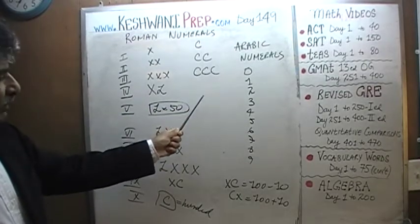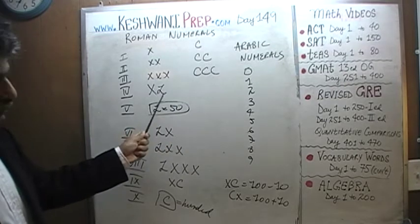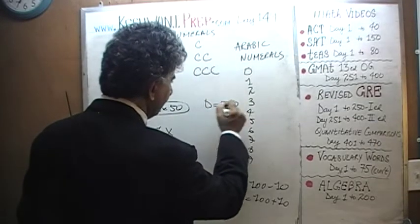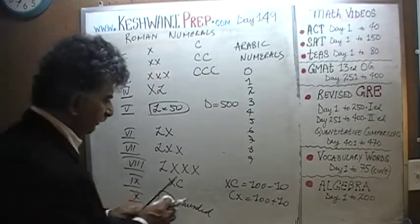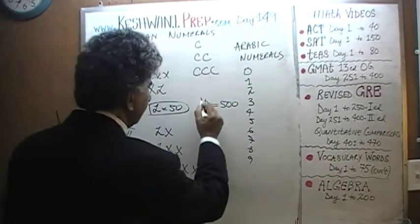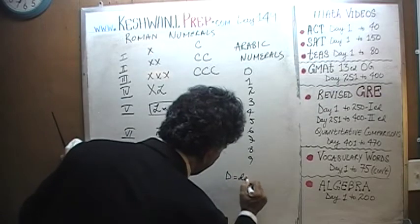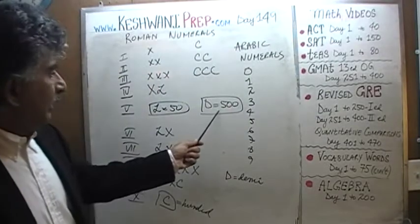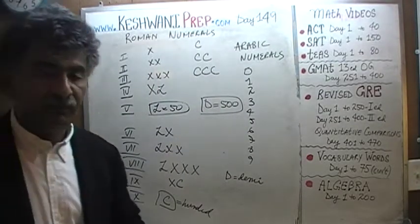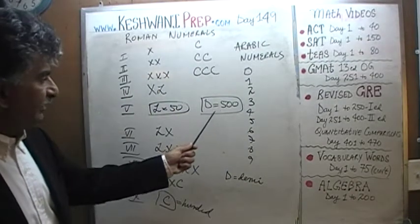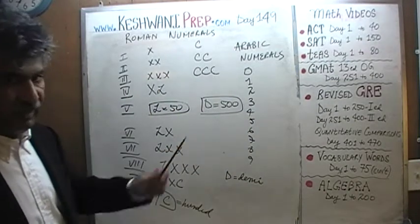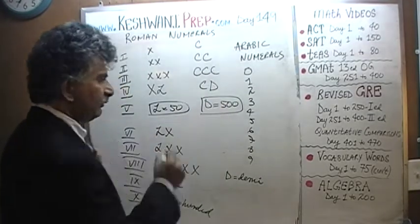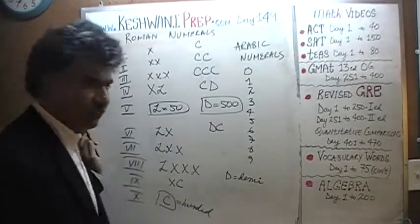How are we going to write 400? We first have to figure out what 500 is. D stands for 500. D stands for the Latin word 'demi,' which means half — half of a thousand. So D is 500. How do we write 400? Same as before: if we write C to the left of D, it becomes 400. If we write C to the right of D, it becomes 600, which is 500 plus 100.